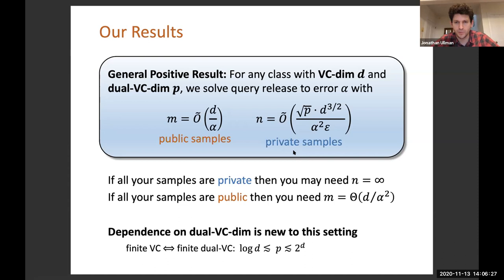The way I'd like to interpret this result is that we have a class of problems where if you had only private data, you might potentially need an infinite number of samples to solve the problem. If all your samples were public, then standard results in learning theory say that you need about VC dimension over alpha squared samples. We show that if only a small fraction of your data is made public, it's as good as having all of the data made public. Having a small fraction of your data be public enables you to make very effective use of the remaining data, which is still private.